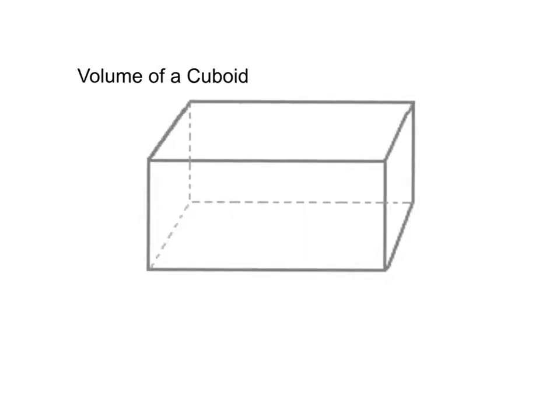A cuboid is a three-dimensional rectangle. It has a length, a depth, and a height. To calculate the volume of the cuboid, you multiply these three dimensions together. Length times depth times height.